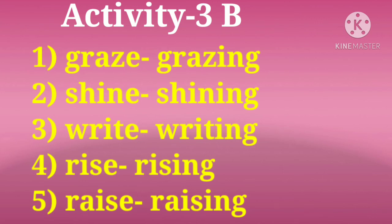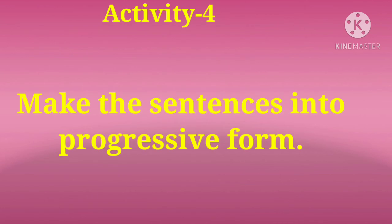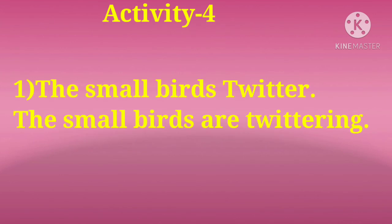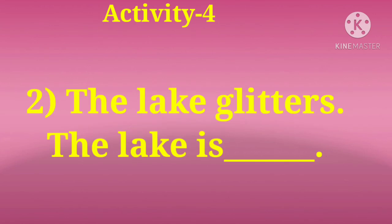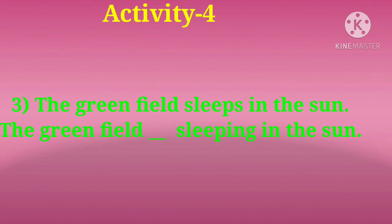Come back to the poem. Make the following sentences into progressive form. For example: 'The small birds twitter' becomes 'The small birds are twittering.' Similarly: 'The lake glitters' → 'The lake is...' — you write the verb. 'The green field sleeps in the sun' → 'The green field is sleeping in the sun.'